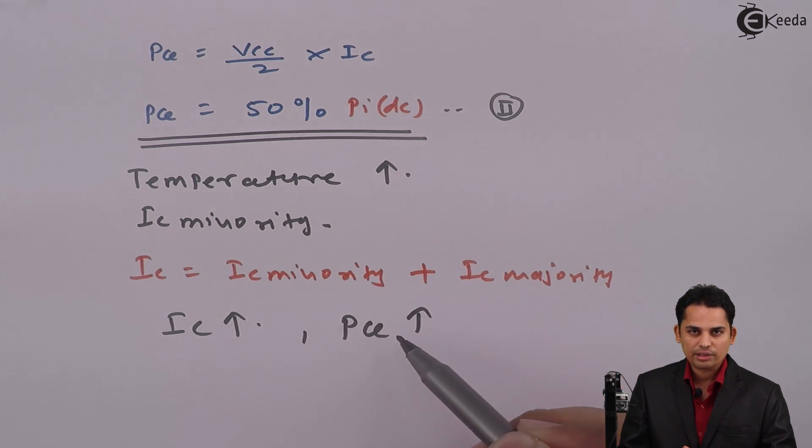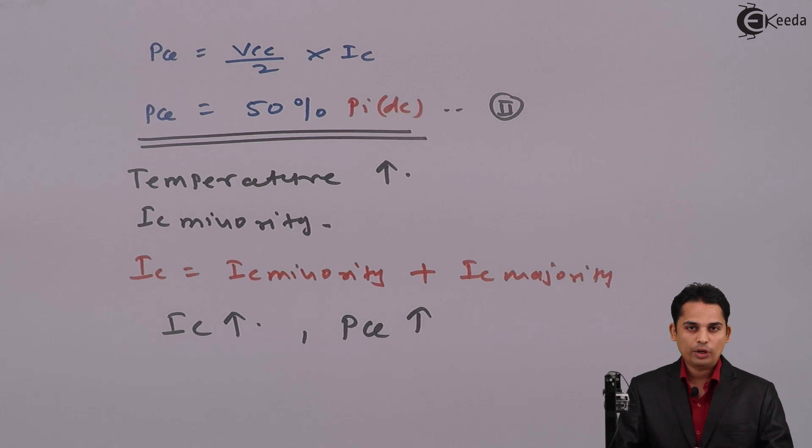And this process will become cyclic. In this cycle, what will happen is first, temperature across transistor will increase. Because of that, IC will increase. And again, temperature will increase, power drop will increase. This process will become cyclic. And at the end, our transistor will get damaged because of this. And hence, we need to bias BJT against temperature variation.